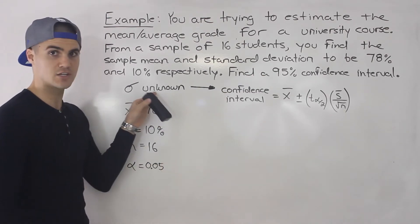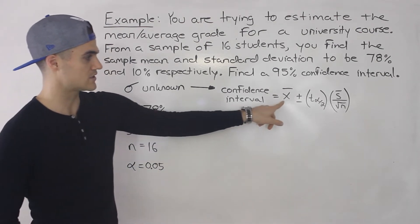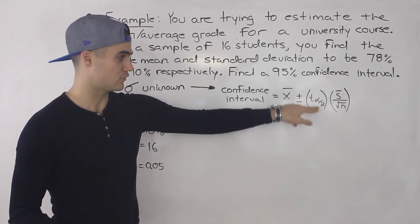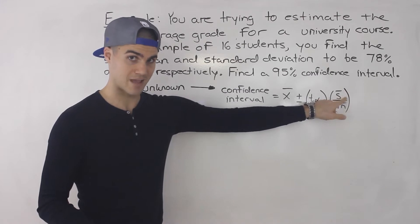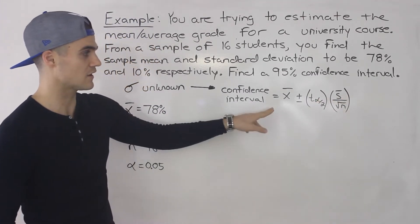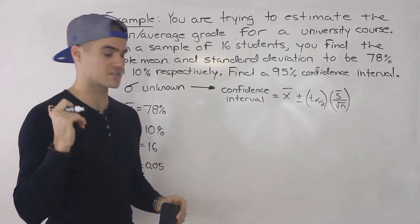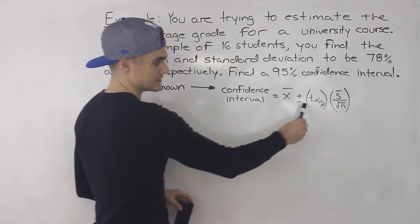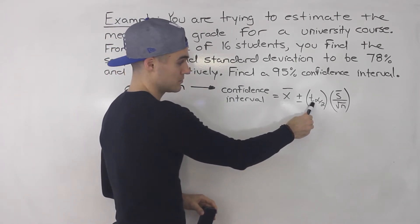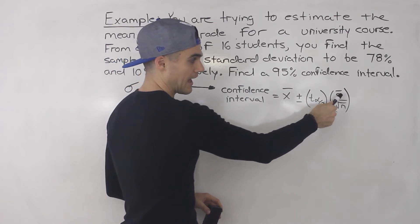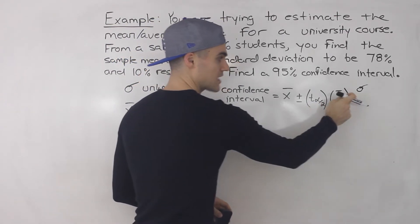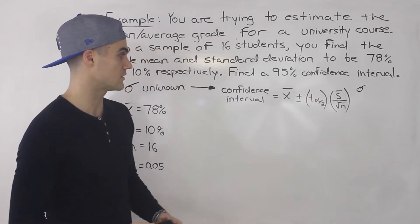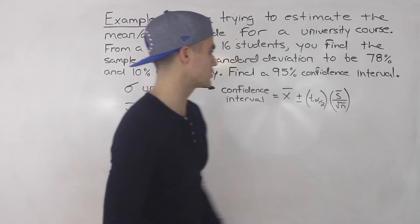When the population standard deviation is unknown, the confidence interval takes this format: x-bar plus or minus the t-value at alpha over 2, times the sample standard deviation over the square root of n. Notice it's very similar to the format when the standard deviation was known in the previous question. The only difference is that instead of using z, we're now using the t-distribution. And instead of the population standard deviation, we use the sample standard deviation.